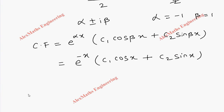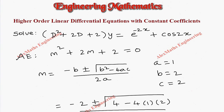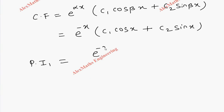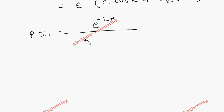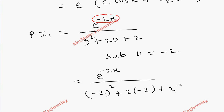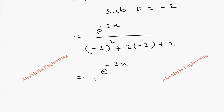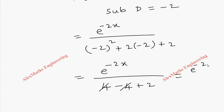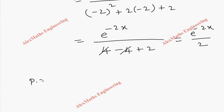Now coming to Particular Integral 1. We take the first term e^(-2x), and in the denominator we copy the operator: d² + 2d + 2. Wherever d appears we substitute minus 2 as per the procedure. So the numerator is e^(-2x) as it is, and the denominator becomes 4 minus 4 plus 2 = 2. So PI₁ = e^(-2x) / 2.